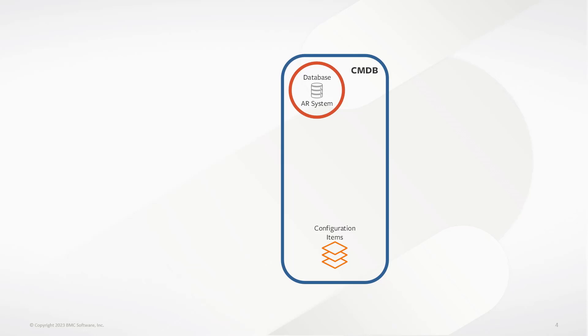In the Helix ITSM system, everything starts with your database and AR system — if you don't have that right, everything else doesn't matter. In a BMC SaaS environment, BMC takes care of that for you; in on-prem, you set up a SQL, Postgres, or Oracle database and install AR system on it. On top of that sits CMDB — a configuration management database — which is a place where you house configuration items, keep track of them, and keep them updated so other applications can utilize them. A CI is anything in your business that can change and gives you value.